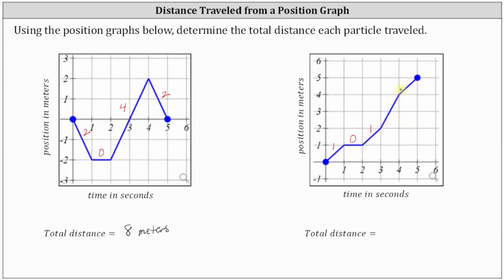From three seconds to four seconds, the particle travels from a position of positive two meters to a position of positive four meters, traveling two meters. Then from four seconds to five seconds, the particle travels from four meters to five meters, traveling one meter. The total distance traveled is one plus one plus two plus one meters, or five meters.